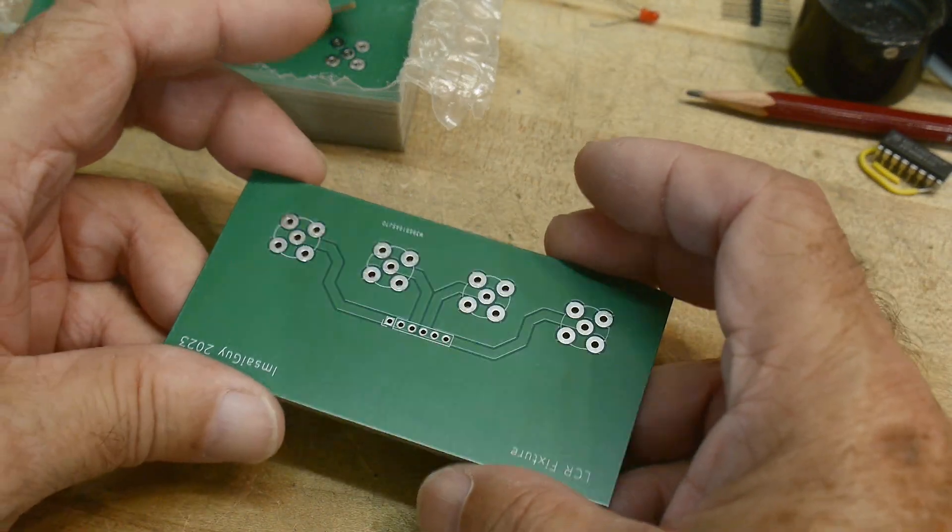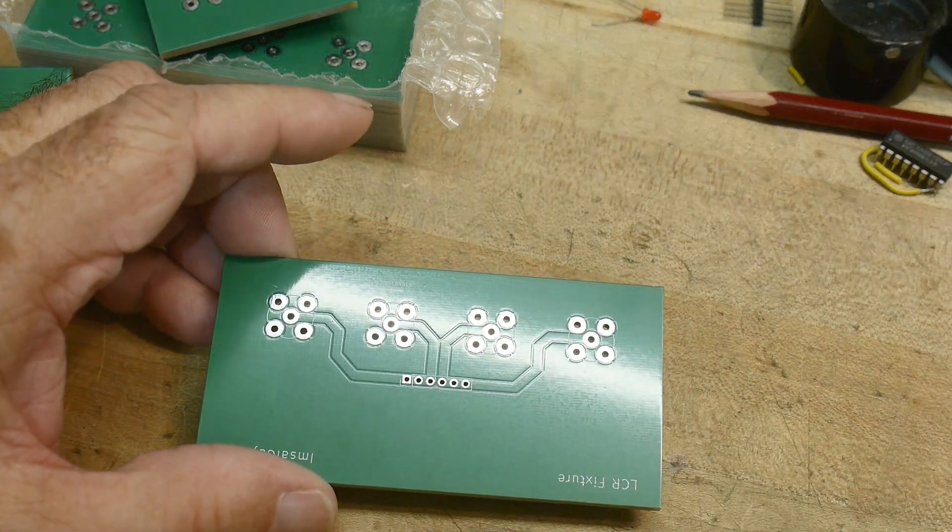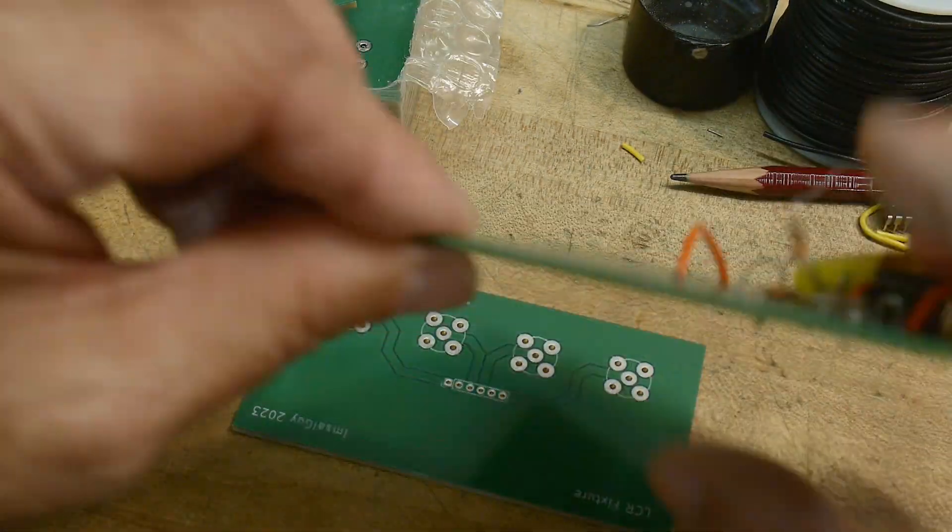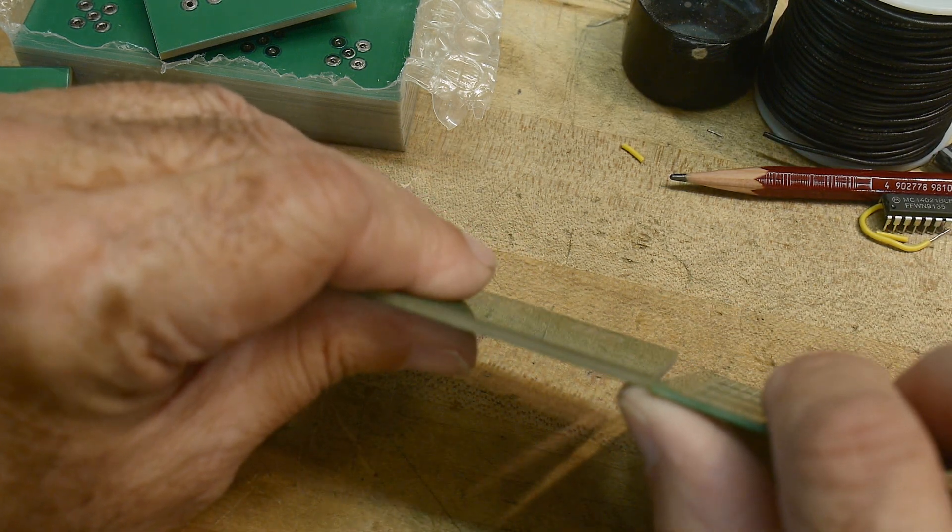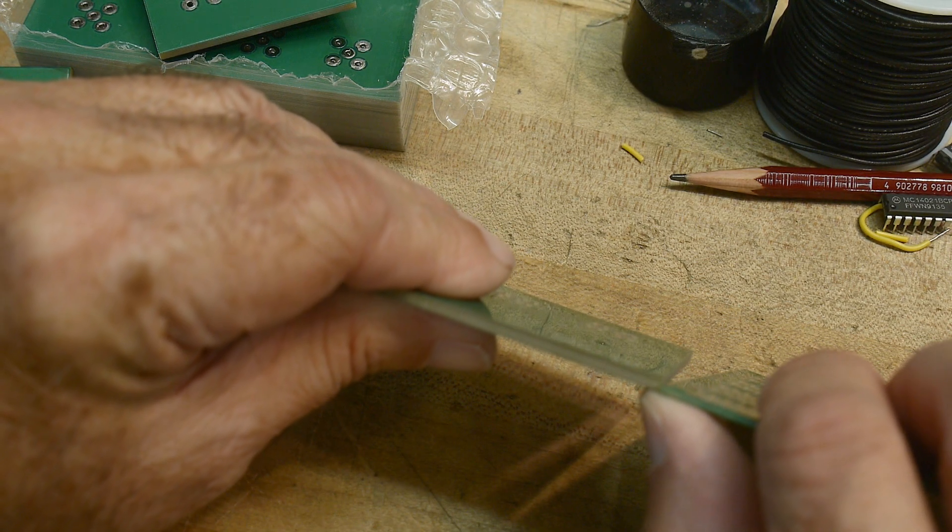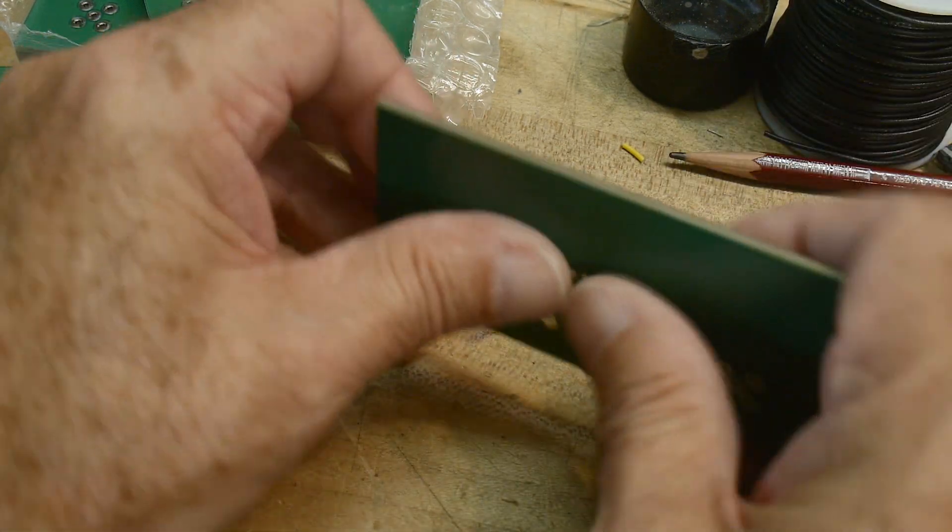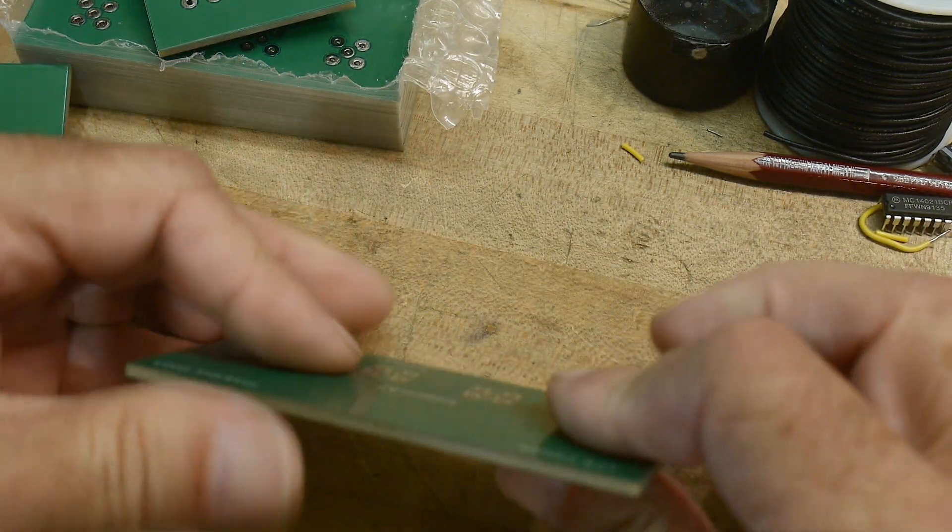When you have PC boards manufactured, you can choose the thickness. Generally, this one right in front of me here, generally you get a 1.6 millimeter board. That's a standard thickness, 0.062 inches. I made these 2.4 millimeters, so they are very, very stout.